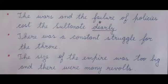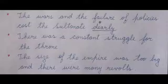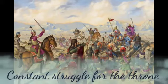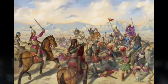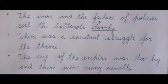Fourthly, there was a constant struggle for the throne — meaning the rulers kept on fighting among themselves to sit on the throne. Finally, the size of the empire was too big and there were many revolts.